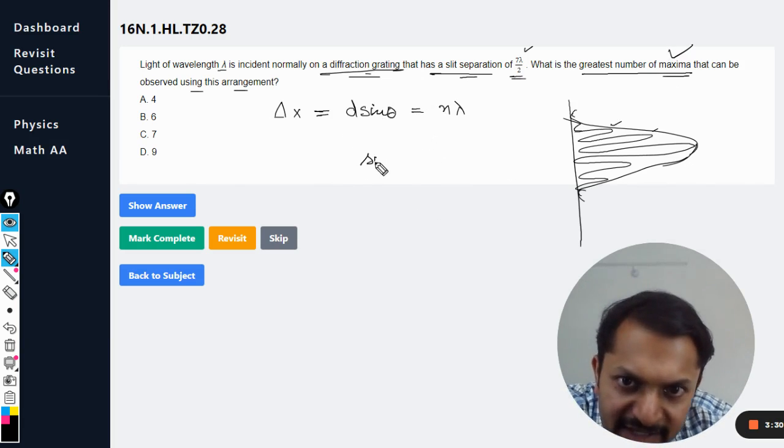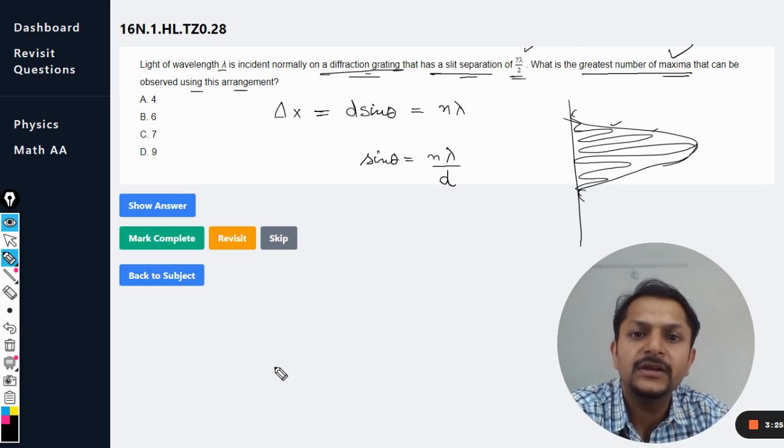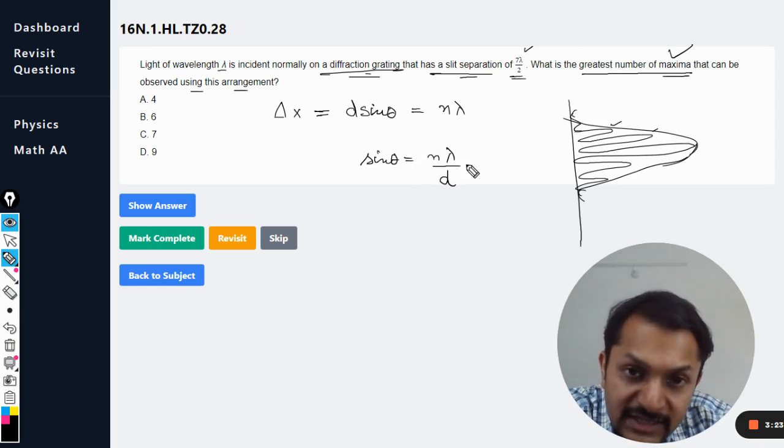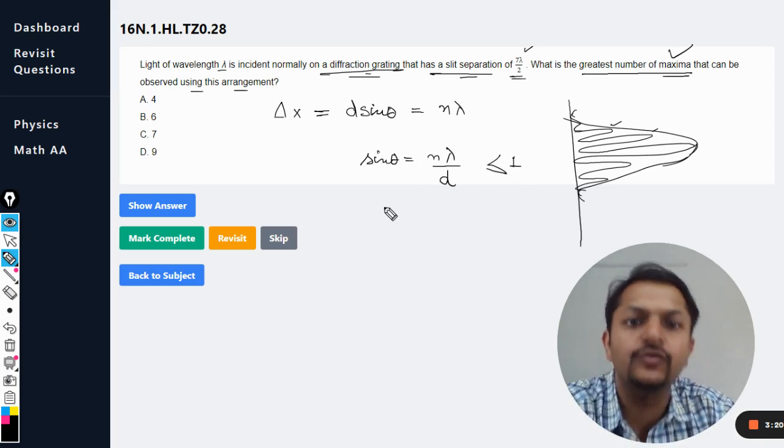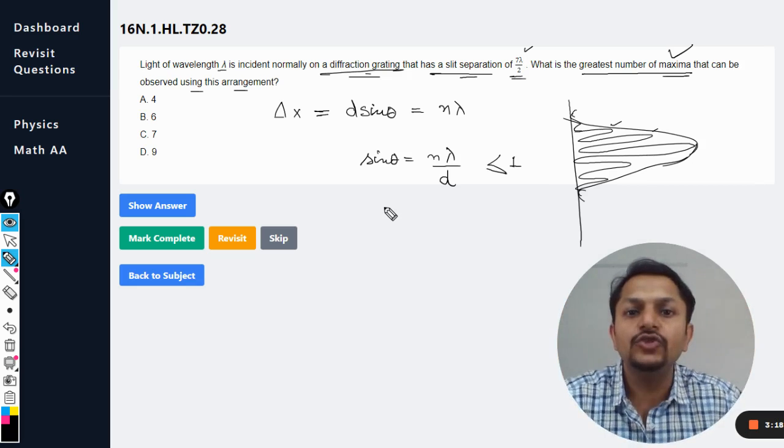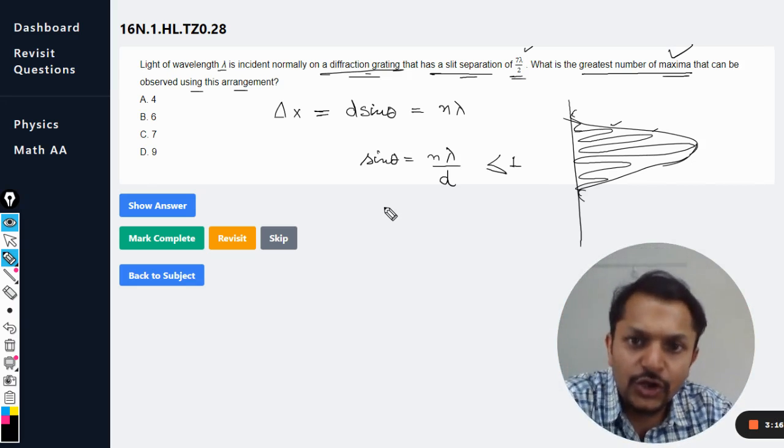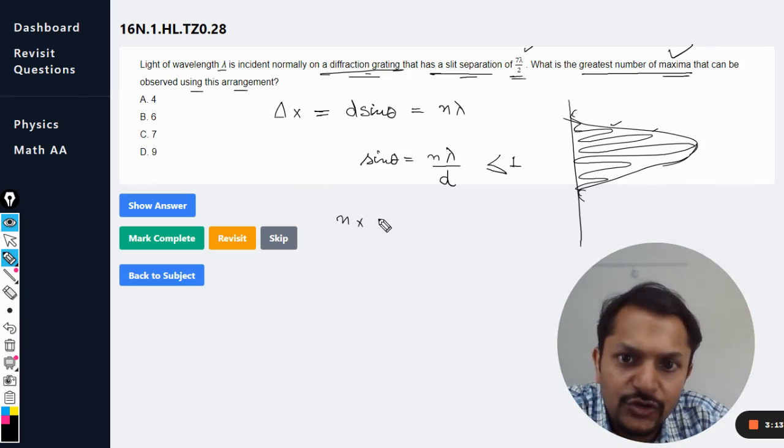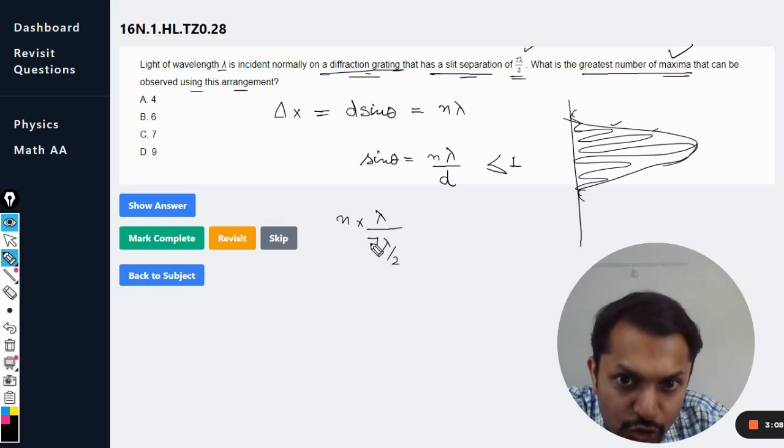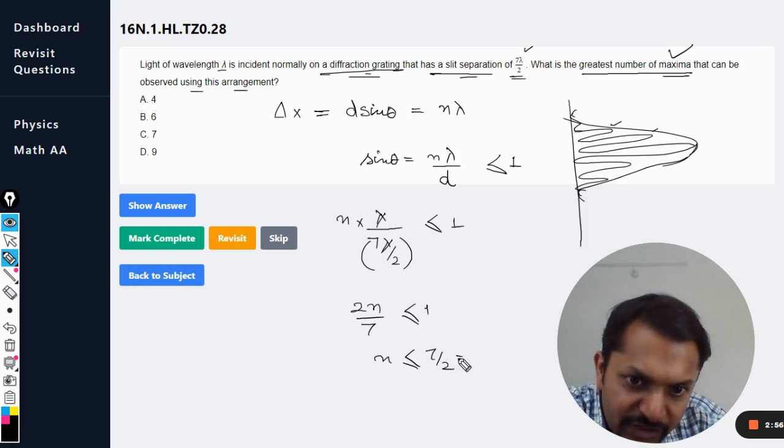Accordingly we can say that sine theta is equal to n lambda divided by d. Now this sine theta should be less than or equal to one. This is the condition we use to find the value of n. So n into the wavelength which can be taken as lambda, and d can be taken as 7 lambda divided by 2, should be less than equal to 1. Lambda lambda gets cancelled out, 2 will go into the numerator. So n is less than equal to 7 by 2, which is 3.5.